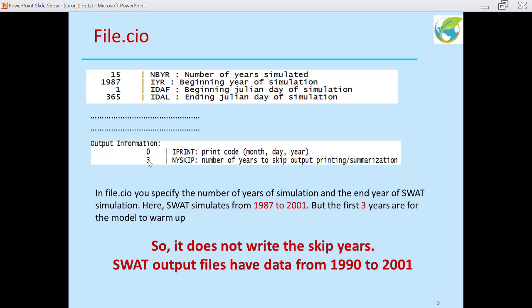So if you are simulating for 15 years from 1987, then your end year of simulation is 2001. Your beginning year of simulation in file.cio is 1987, but SWAT does not write the skip years.